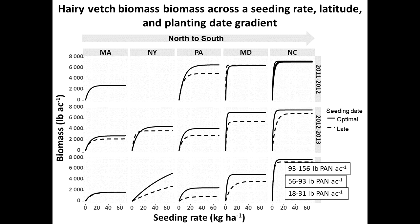This gives you a sense of plant-available nitrogen. In the upper tier like North Carolina, you can get about 100 pounds per acre of plant-available nitrogen during the growing season in corn. In the lower tier like Massachusetts, you're looking at about 18 to 30 pounds per acre.